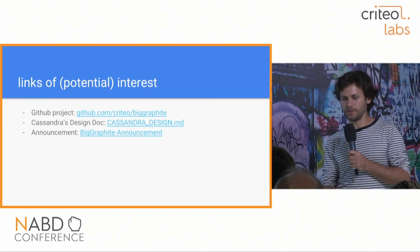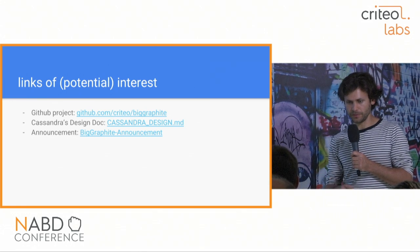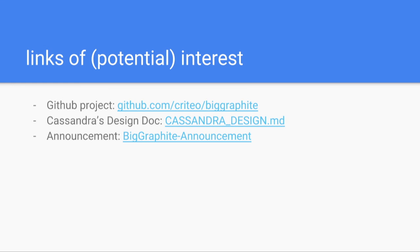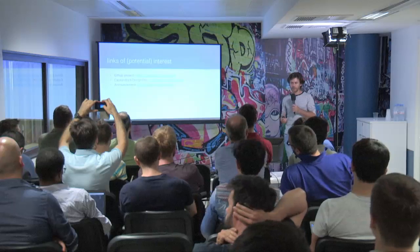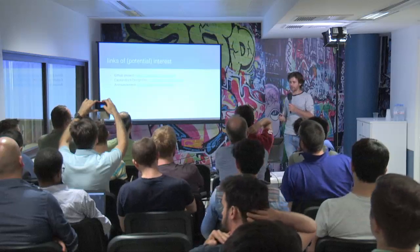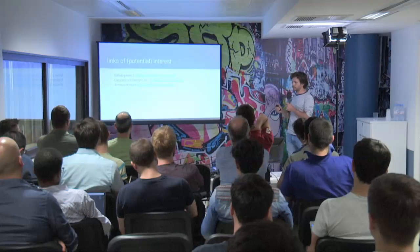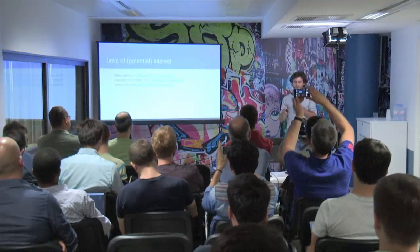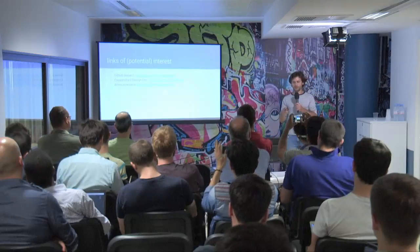Some useful links: the GitHub project (everything is open source, Apache license), the design document describing exactly why decisions were made, and the announcement article explaining the ecosystem choices.